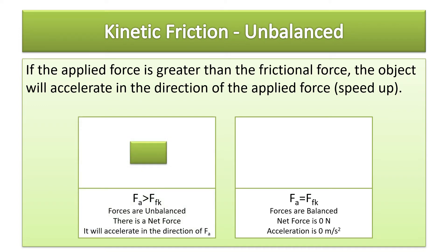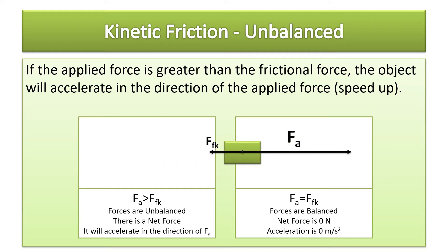The kinetic friction doesn't change — it stays the same magnitude. But you can push harder on the object, and if you do push harder, then the forces are going to be unbalanced. Newton says that's an unbalanced force, so there's going to be some acceleration. The object speeds up and accelerates in the direction of the applied force, because that's the direction of the net force.